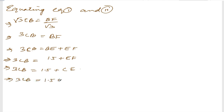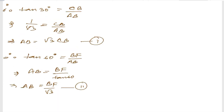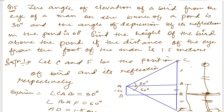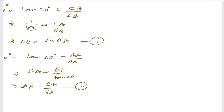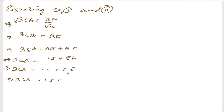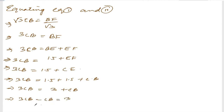CE is CB plus BE, and BE is 1.5 meters, so CE equals CB plus 1.5. Therefore, 3CB equals 1.5 plus CB plus 1.5, which gives 3CB equals 3 plus CB. Transferring CB: 3CB minus CB equals 3, so 2CB equals 3, and CB equals 3 divided by 2, which is 1.5 meters.